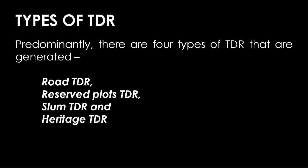Types of TDR: There are predominantly four types of TDR generated — Road TDR, Reserve Plots TDR, Slum TDR, and Heritage TDR. In most cities, the majority of construction activities take place with the help of Slum TDR. Based on the stages of development, a city is classified into various zones: fully developed, moderately developed, and sparsely developed. Transferable development rights are usually transferred from fully developed zones to the other zones.